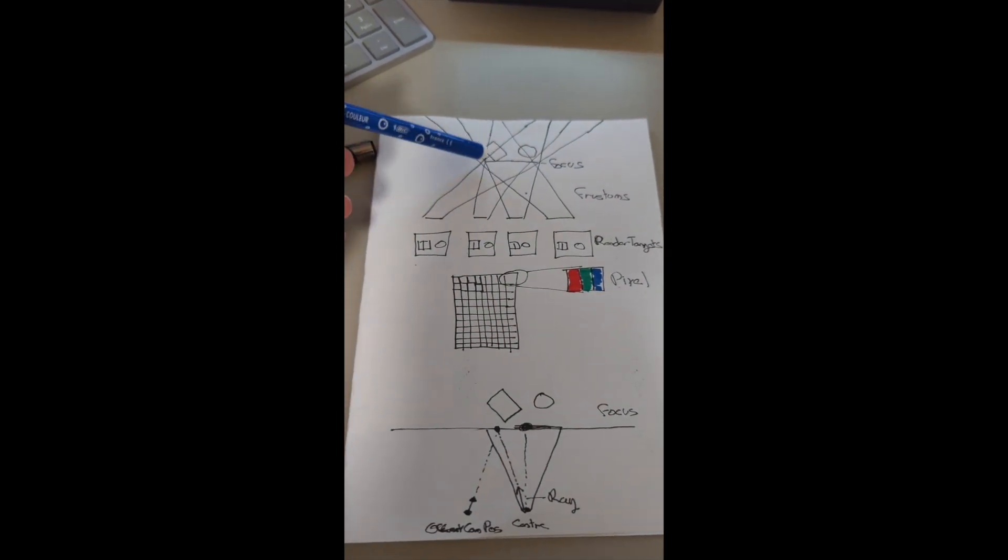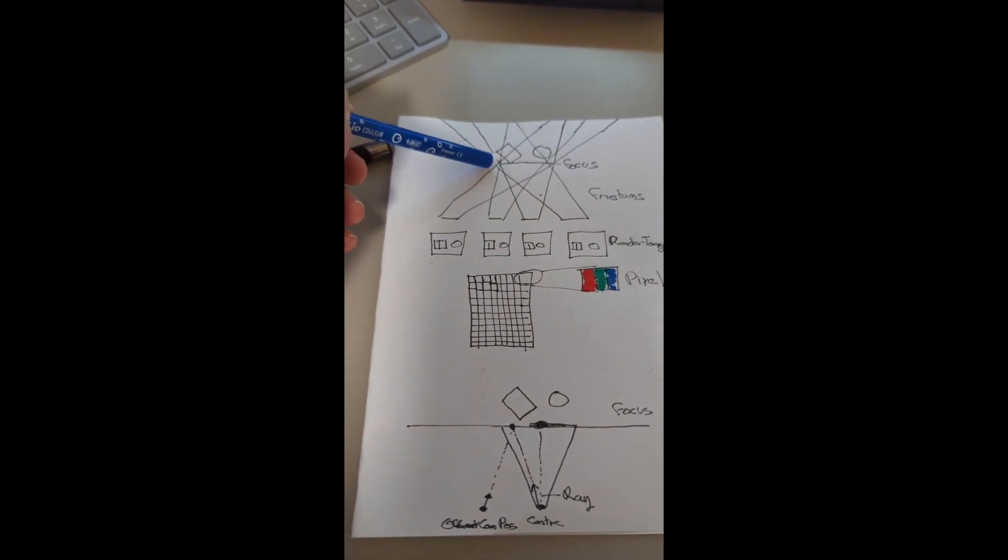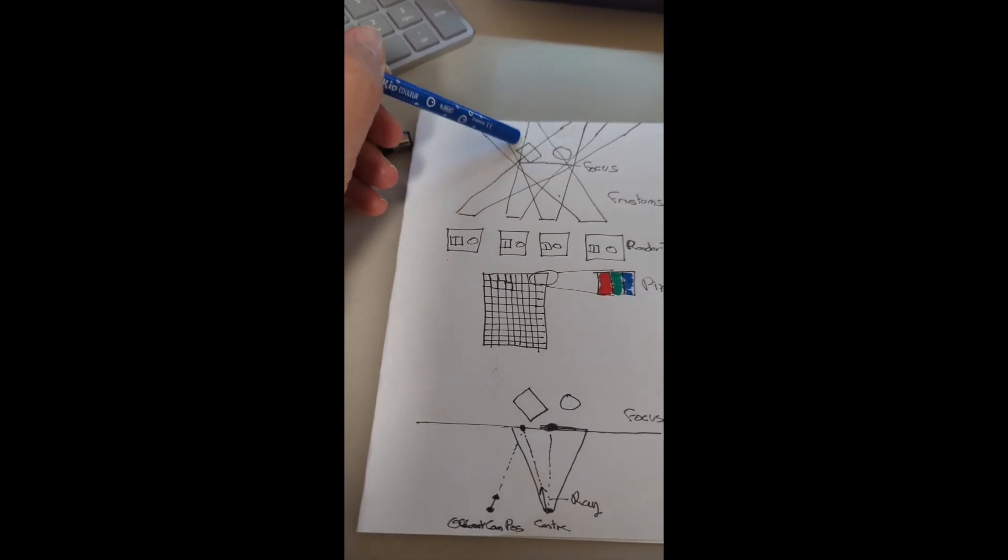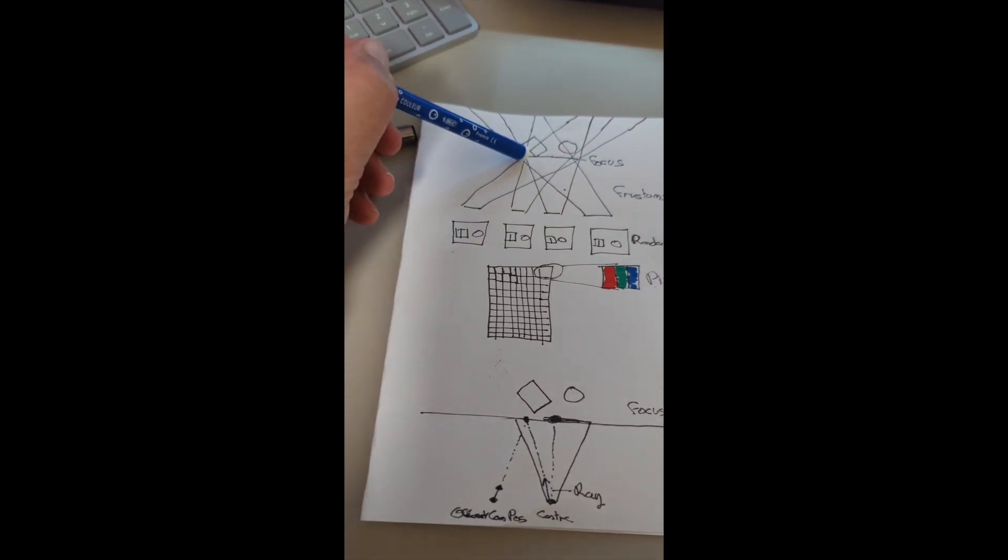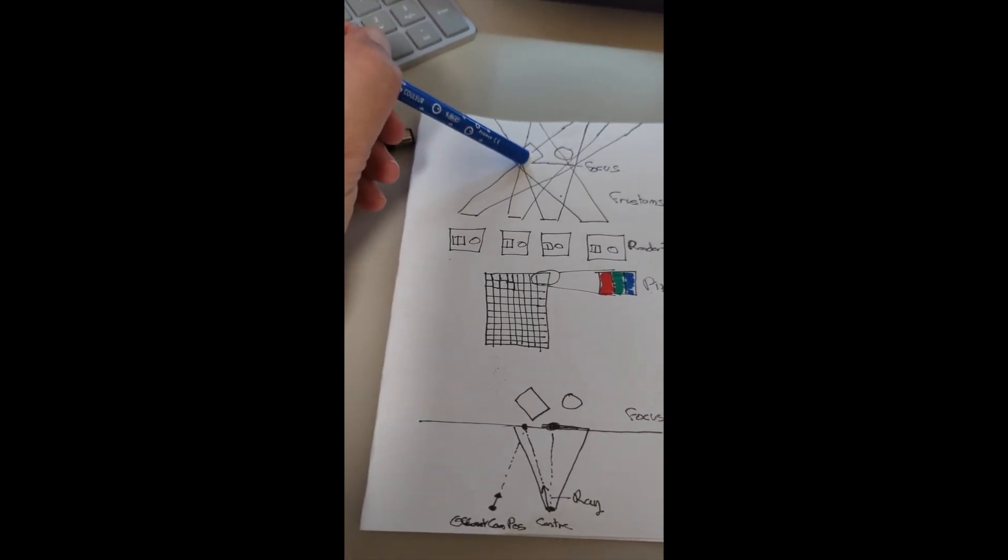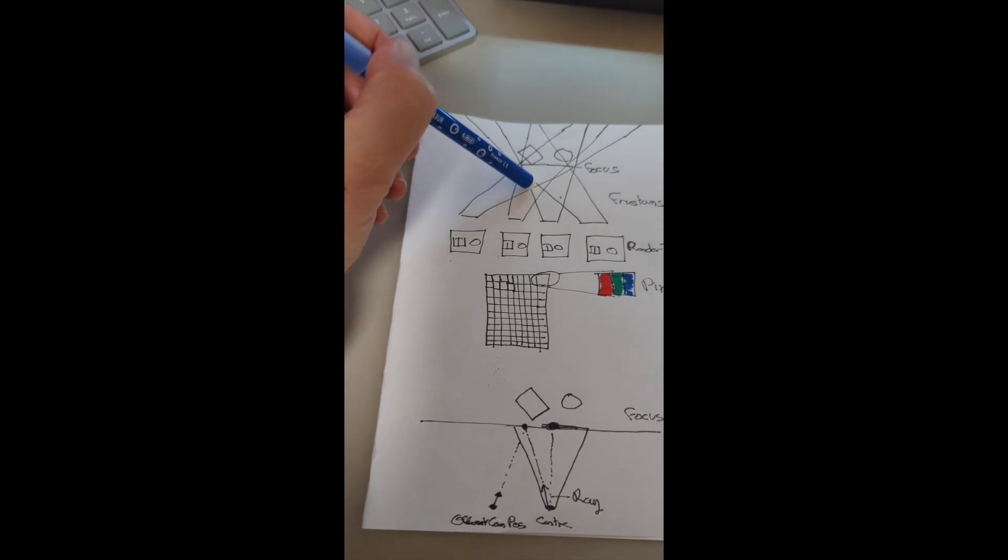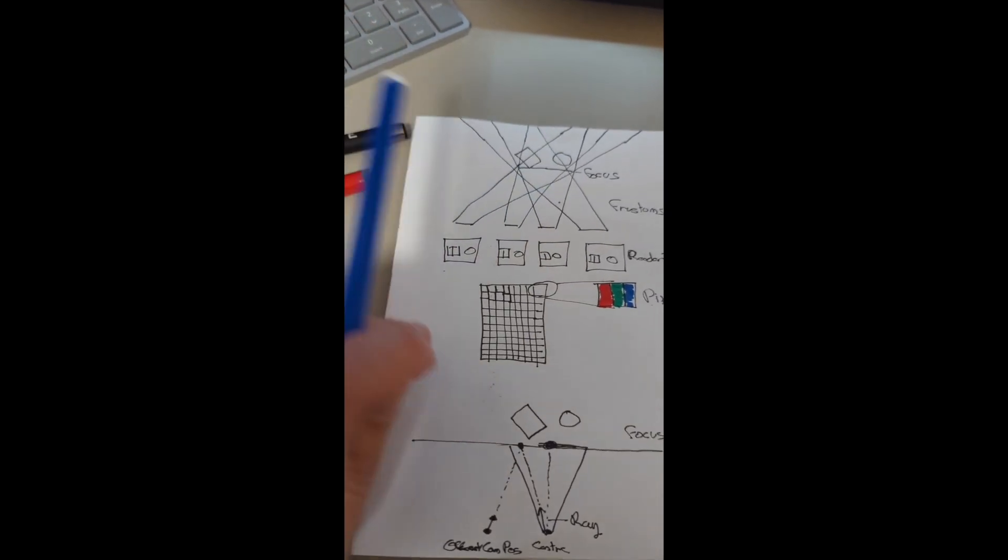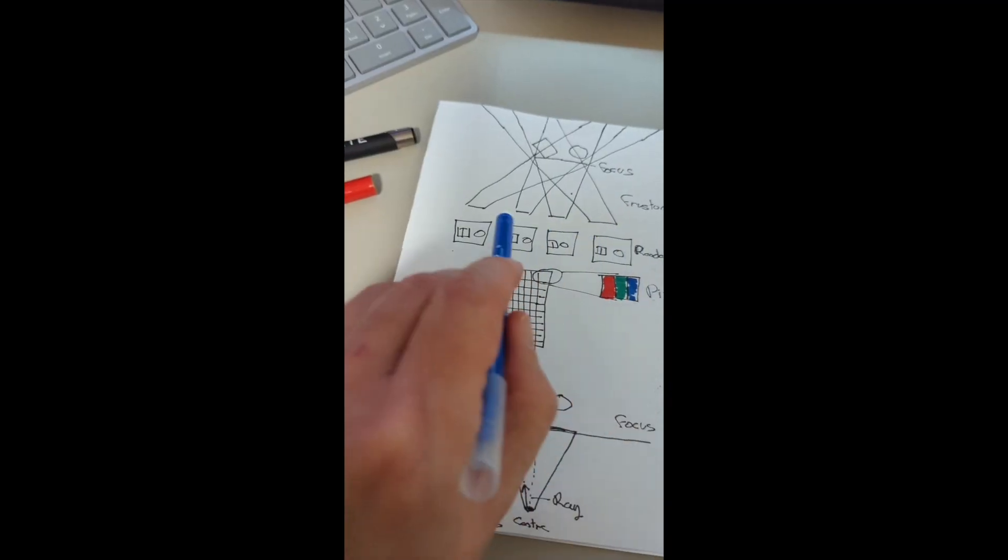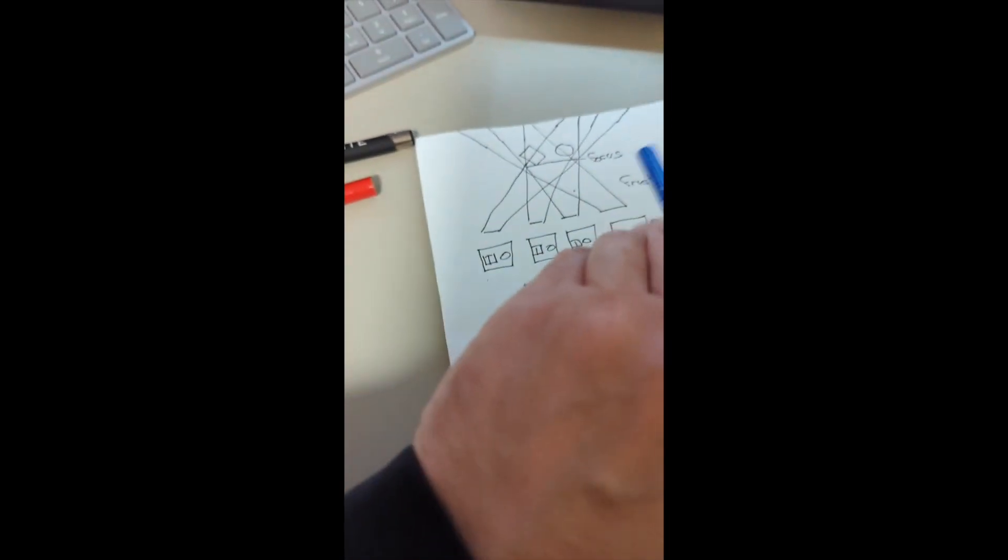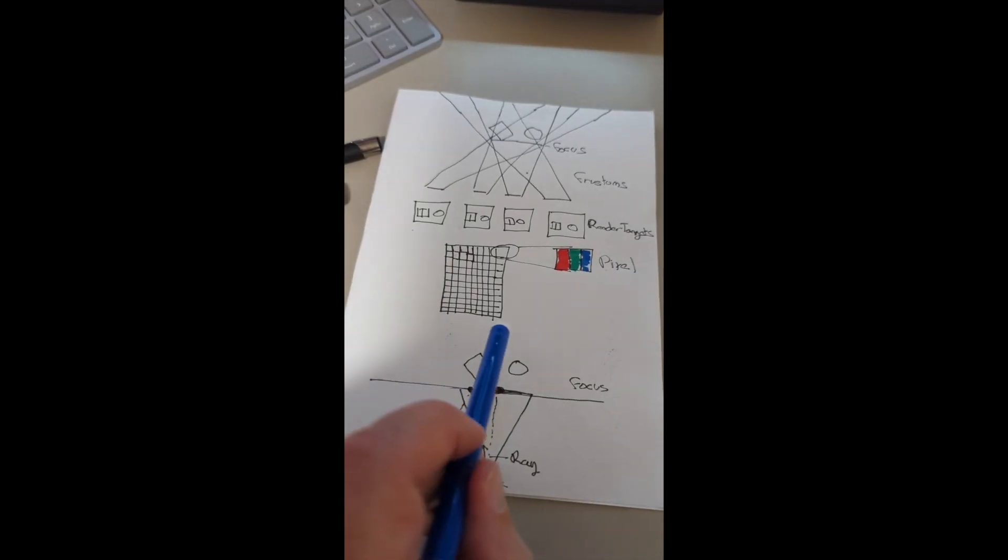We want to skew our frustum so that they all intersect along a plane here. You can think of this plane as the actual physical plane of the display. Anything behind this plane in the virtual world will look behind the screen in the real world, and anything in front will appear to stick out of the display in real life. Normally you'd render a whole bunch of these, typically around 40 from different views.